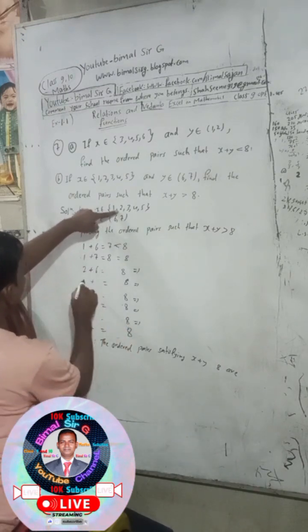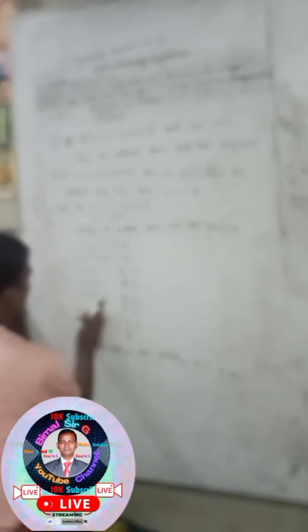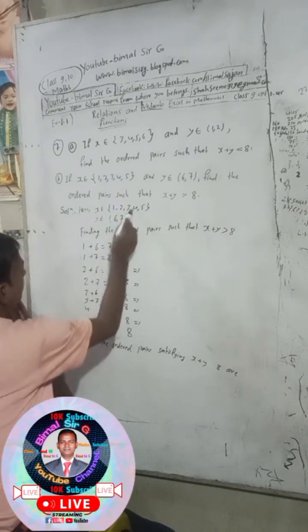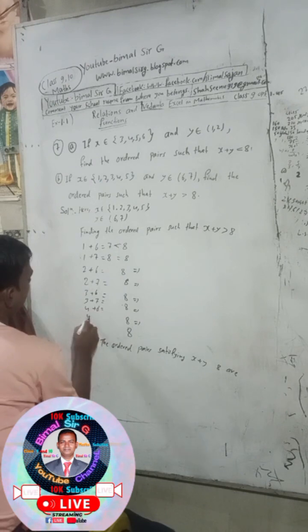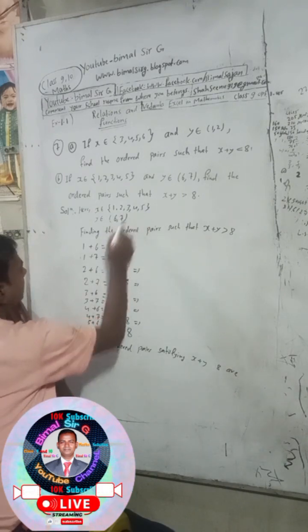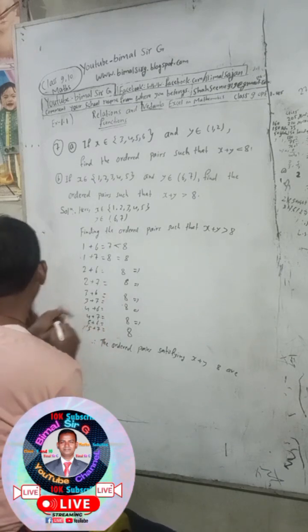Checking pairs: (3,6), (3,7), (4,6), (4,7), (5,6), (5,7). Sums: 3+6=9, 3+7=10, 4+6=10, 4+7=11, 5+6=11, 5+7=12 — all greater than 8. Also (2,7): 2+7=9, which qualifies.